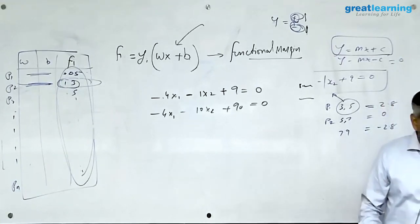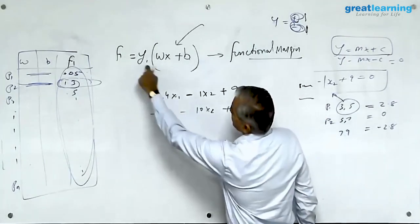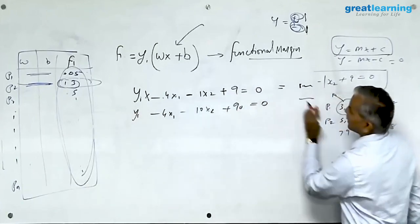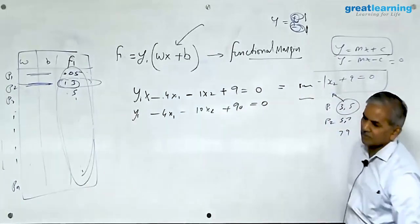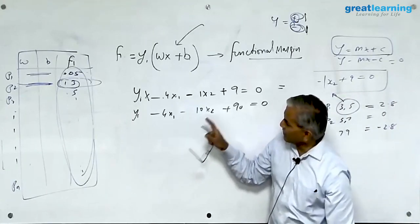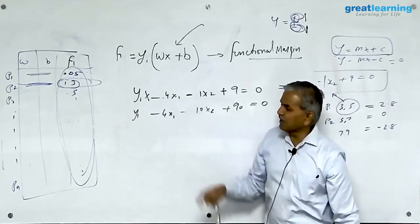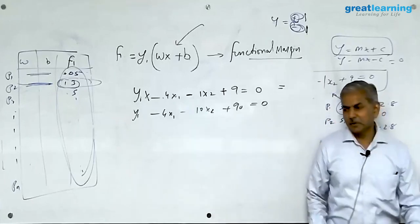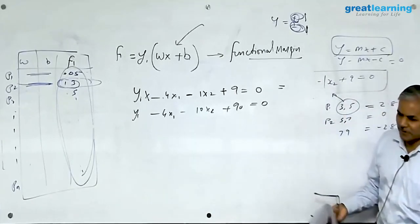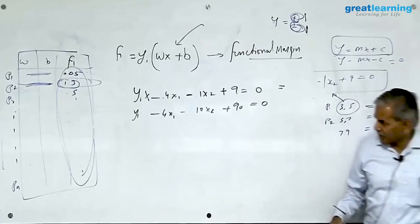However, when I put this equation into this format y_i into this will give you a smaller number, this will give you a larger number. The problem is two different expressions of the same line can mislead the algorithm. To prevent this from misleading the algorithm we do some magic.